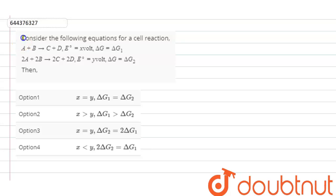The question is: consider the following equation for a cell reaction. A plus B gives you C plus D, E naught is equal to X, delta G is equal to delta G1. 2A plus 2B gives you 2C plus 2D, E naught is equal to Y, delta G is equal to delta G2. Then,